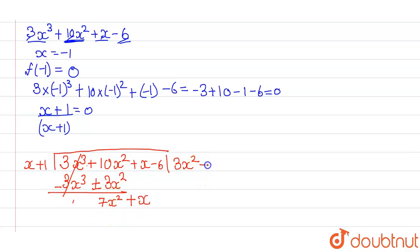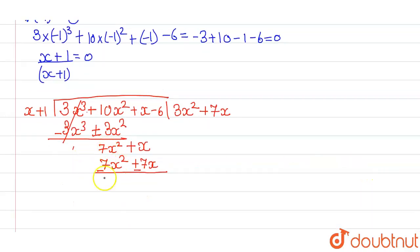We can multiply here 7x to it. This will give us 7x square plus 7x minus minus. This will give us minus 6x minus 6. Minus 6 multiplied to it, this will become minus 6x minus 6, sign change.